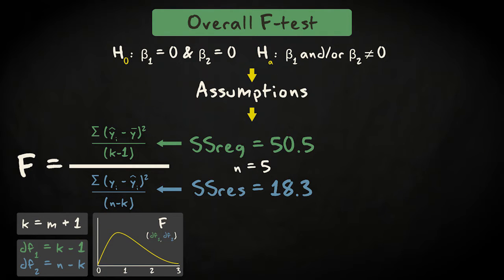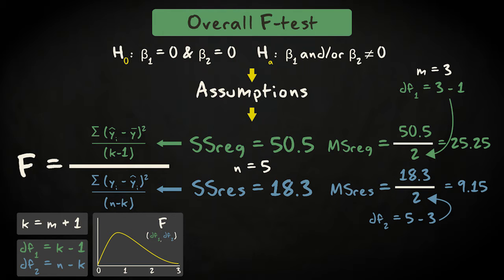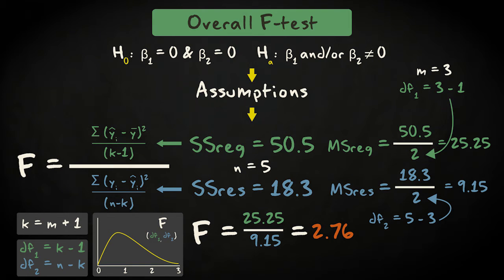Suppose in our example we find a regression sum of squares of 50.5 and a residual sum of squares of 18.3. The regression mean square then equals 25.25, since we divide by 2. The mean square error equals 18.3 divided by 5 minus 3 equals 2, which equals 9.15. This gives us an F-value of 2.76. The p-value, calculated with statistical software, equals 0.226.